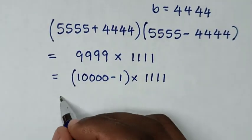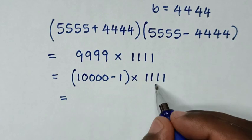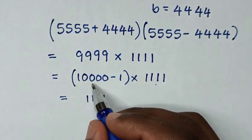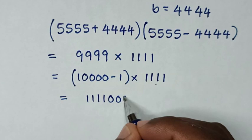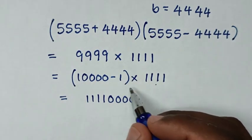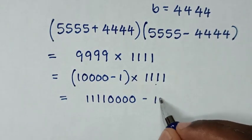Then it will equal 1111 with four zeros, which is 11110000, minus 1111.